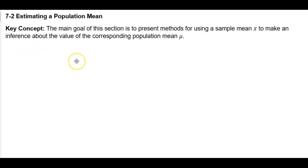Section 7.2 Estimating a Population Mean. Key Concept: The main goal of this section is to present methods for using a sample mean to make an inference about the value of the corresponding population mean.